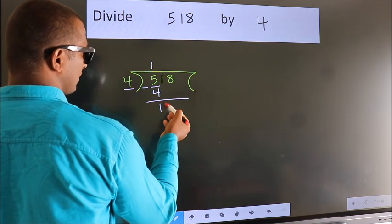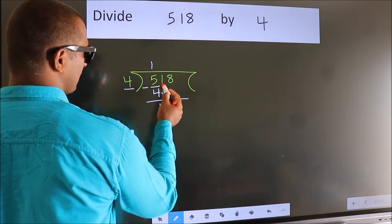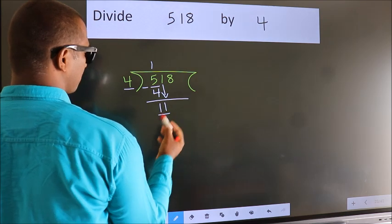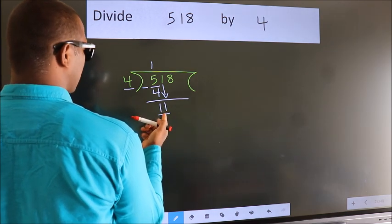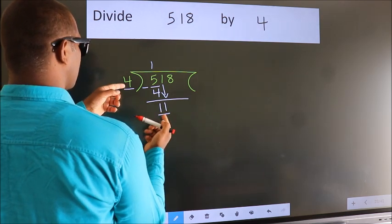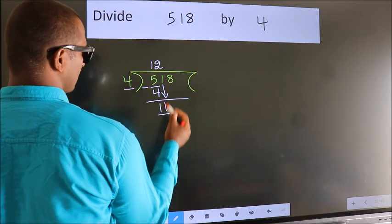After this, bring down the beside number. So, 1 down. So, 11. A number close to 11 in 4 table is 4 twos, 8.